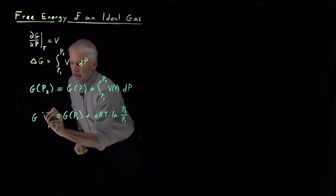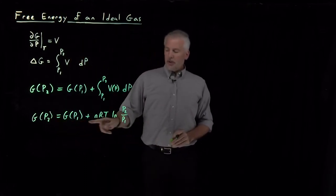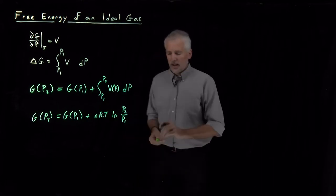So Gibbs free energy at a final pressure is equal to Gibbs free energy at an initial pressure plus nRT log P2 over P1. So far, so good. That's for an ideal gas.